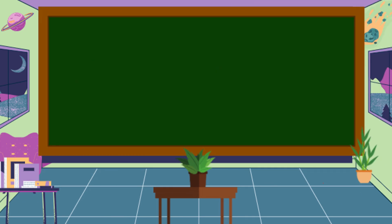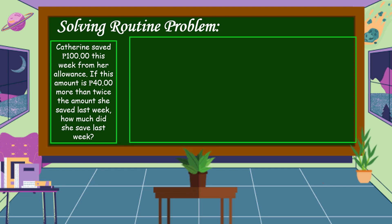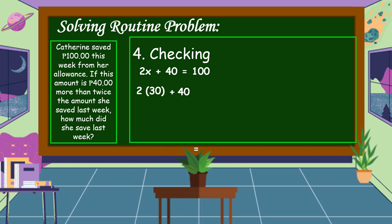We have our answer. The last step is to check it using the original equation: 2x plus 40 is equal to 100. Substituting x equals 30: 2 times 30 plus 40 is equal to 100. 2 times 30 is 60, plus 40 is 100. The other side is also 100, so our equation is balanced. Therefore, our answer is correct.